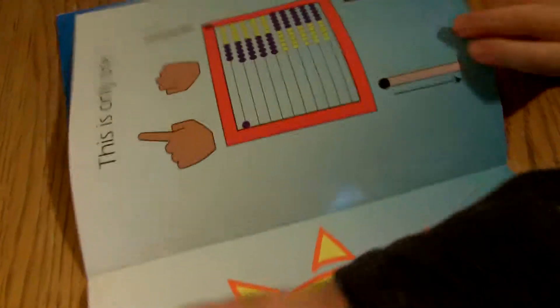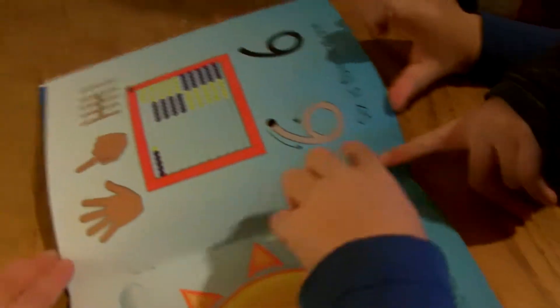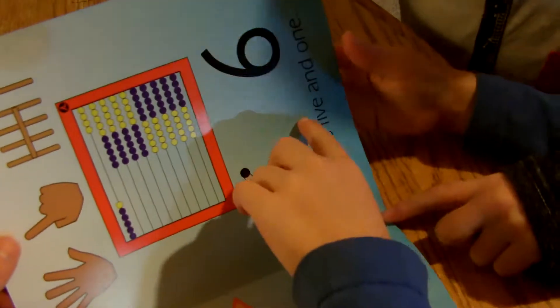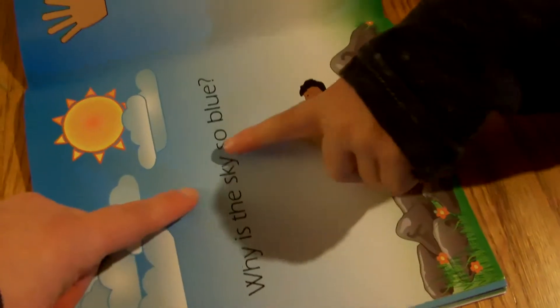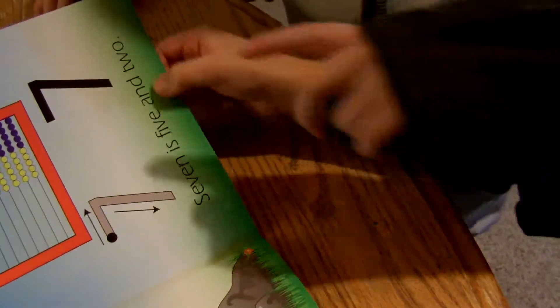Yellow is the sun. This is only one. Why is the sky so blue? Let me show you two. Yellow is the sun. Six is five and one. Why is the sky so blue? Seven is five and two.